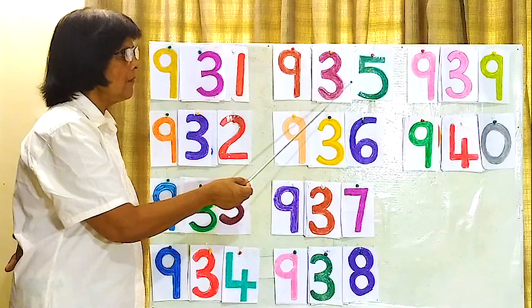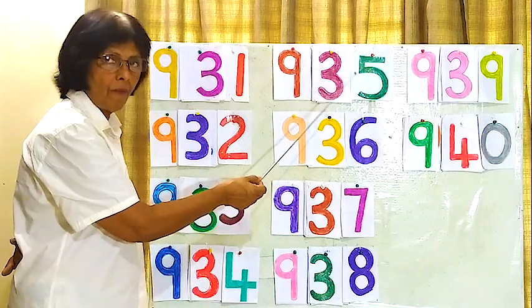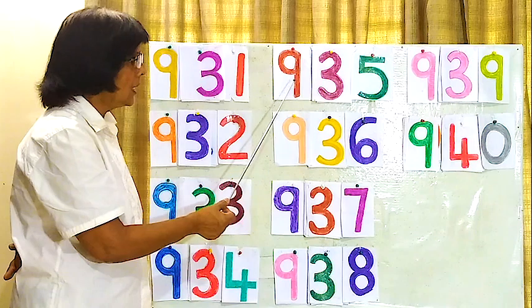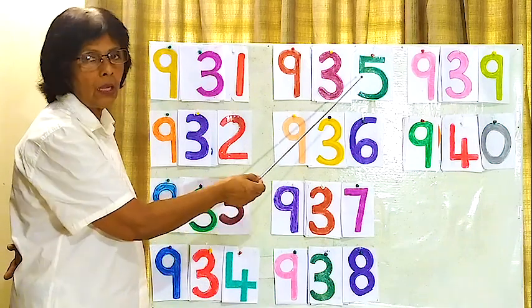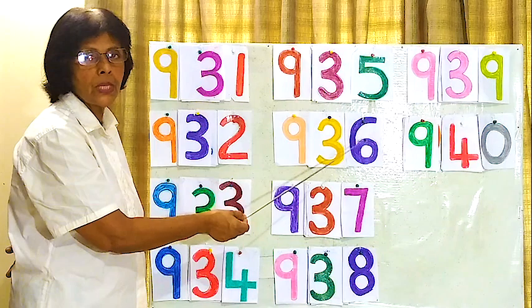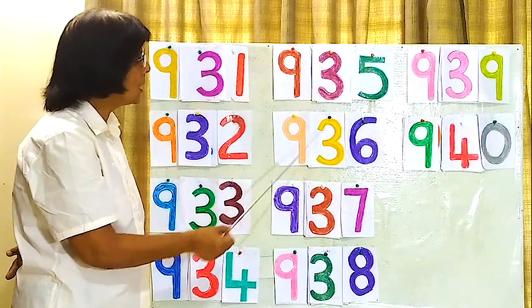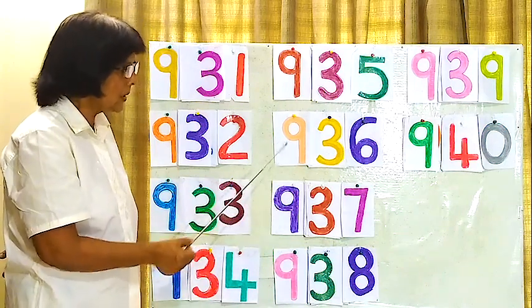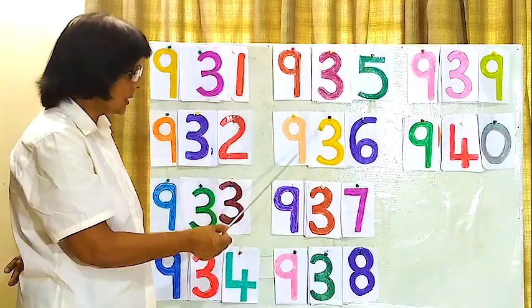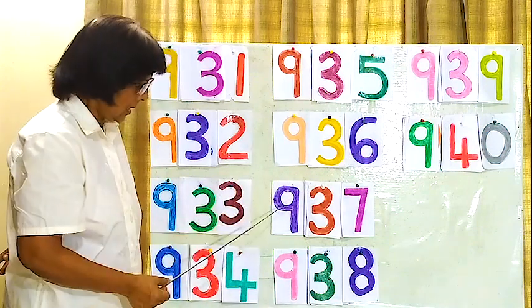935, 935, 935, 935. Next one, 936, 936, 936, 936.